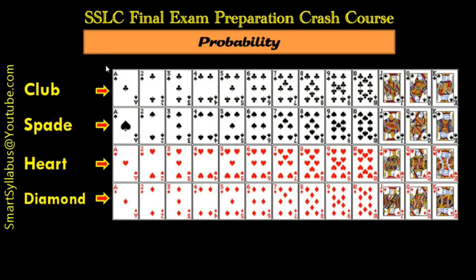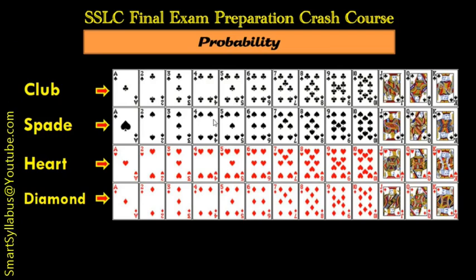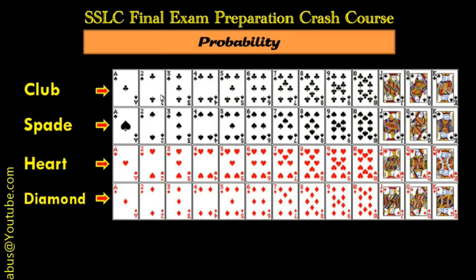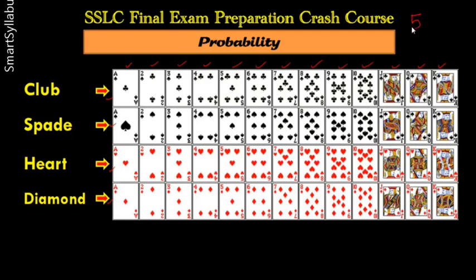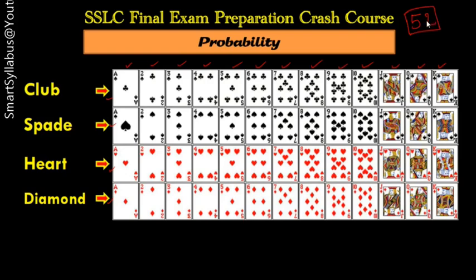Before diving into the sums related to cards, let's get some brief knowledge about the cards. As you can see in the picture, these are the cards we are going to study. First, let's count how many cards are there in one set — counting through the rows: 1 through 13. There are four rows, so four into thirteen equals fifty-two. In a set of cards, totally 52 cards are always present.